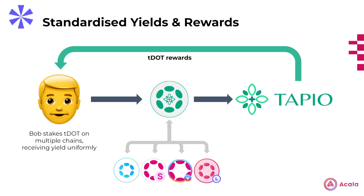Secondly, as different parachains introduce new staking solutions and reward programs, they may also create a novel method of yield accrual, such as how LDOT's rewards are realised within LDOT itself. Tapio is standardising this entire process so users do not have to figure out which staking option to choose, and instead are able to just adopt TDOT and have a simple and single place to claim the rewards of the underlying assets.